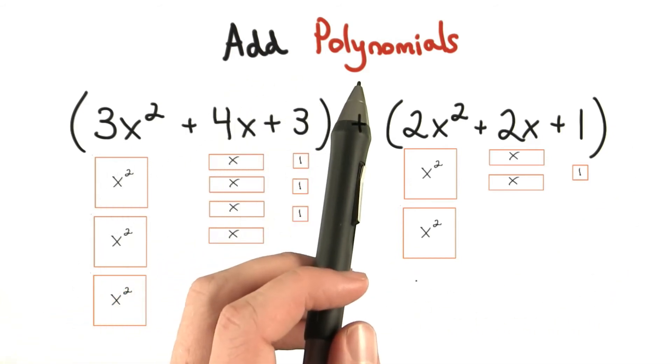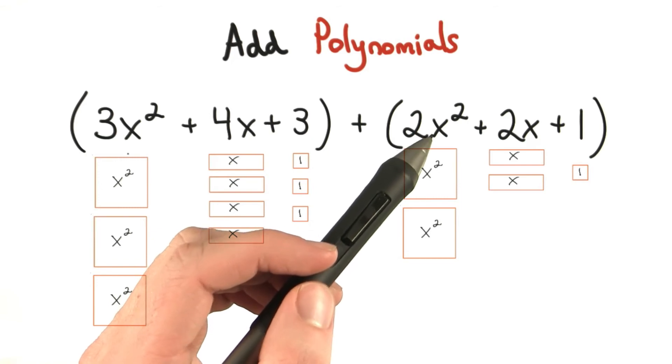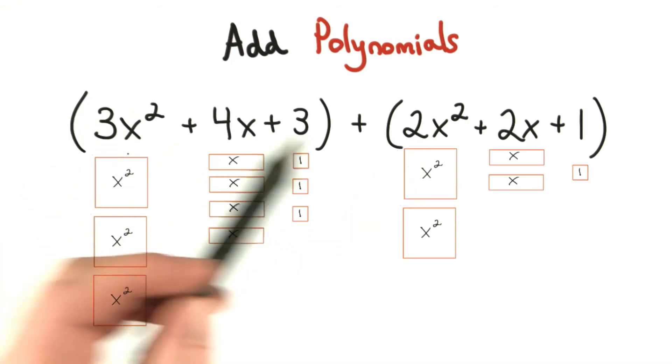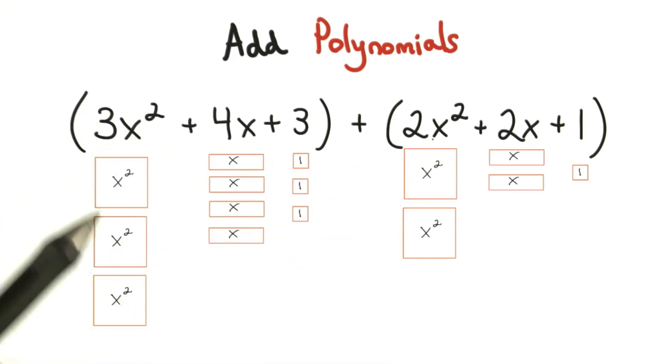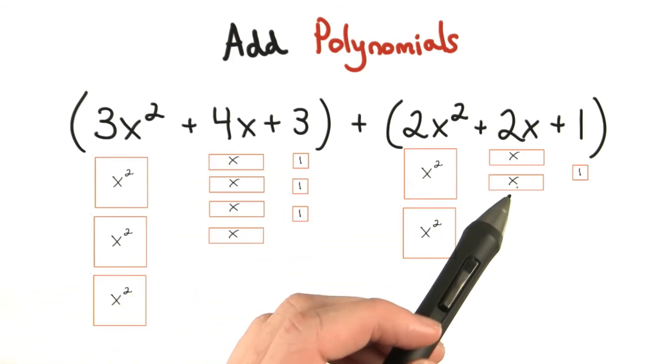So if we want to add these two polynomials together, we want to combine the like terms. To add like terms together, we simply add up the coefficients of the same term. So 3 x squared and 2 x squared would make 5 x squared. 4 x and 2 x would make 6 x's, and 3 and 1 would make 4.